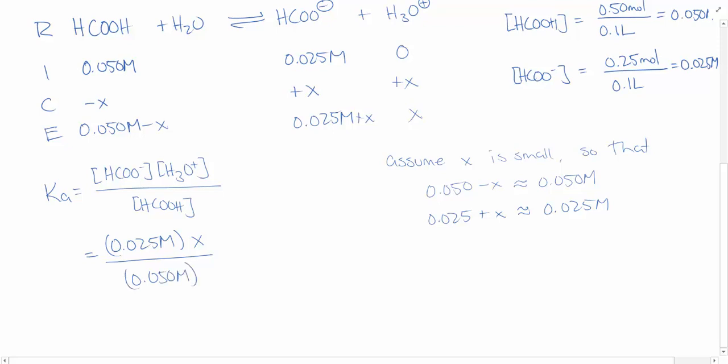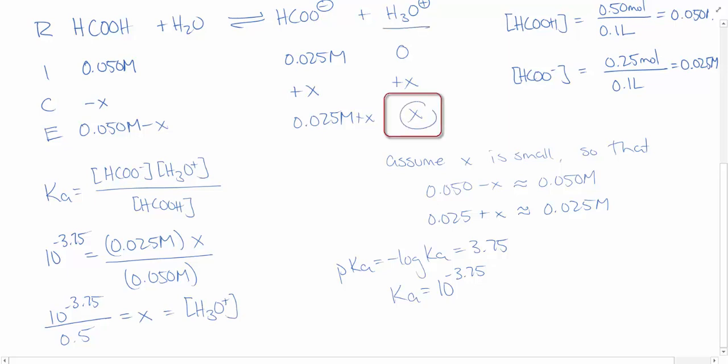Now we need to calculate our Ka. We know our pKa, and pKa is equal to the negative log of Ka, which in the question was given to us as 3.75, so our Ka is equal to 10 to the power of negative 3.75. So this is 10 to the power of negative 3.75. 0.025 over 0.05 is just 1 over 2 or 0.5, so here we have 10 to the negative 3.75 over 0.5 is equal to x, which is our concentration of H3O+, as we can see in this table here.